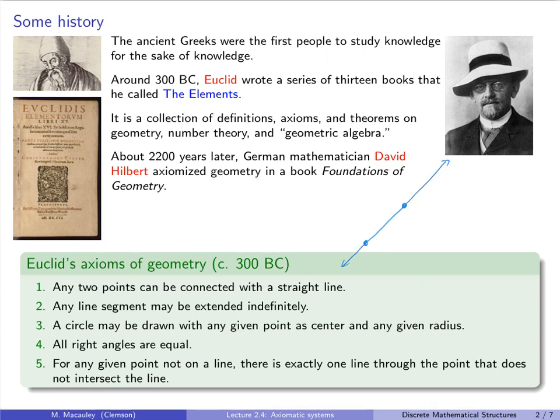Three, a circle may be drawn with any given point as center and any given radius. That also makes sense. If you have a point here and you want to pick a radius, you can certainly draw a circle like this.